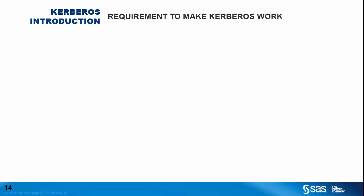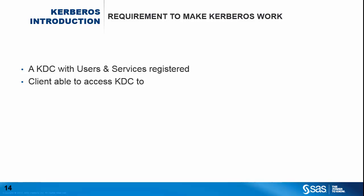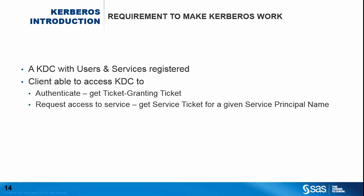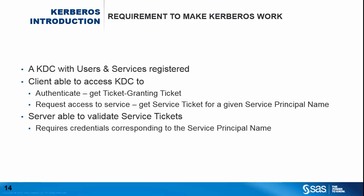To summarise, at a high level, what do we need to have to make Kerberos authentication work? First, we need to have a key distribution centre with both the end users and services registered. The client needs to be able to access the KDC across the network to first authenticate the end user and hence obtain the Ticket Granting Ticket, and then also to request access to the service — to request the service ticket for a given service principal name by presenting the Ticket Granting Ticket. The third head, the service, then needs to be able to validate the service ticket presented by the client, and to do so it needs access to the credentials corresponding to the service principal name used by the client in the request for the service ticket.